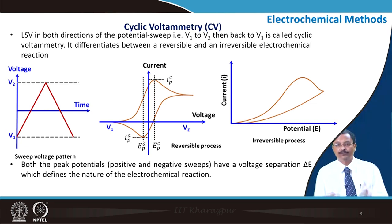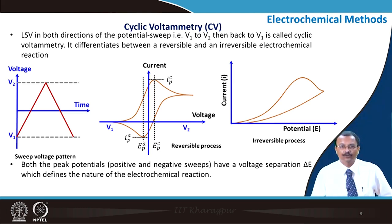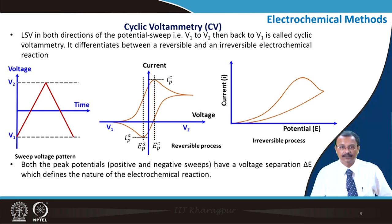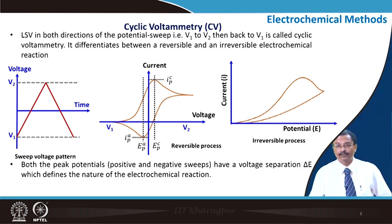We can apply linear sweep voltammetry in both directions of the potential sweep: initially from V₁ to V₂ and then back to V₁. This is called cyclic voltammetry. It differentiates between reversible and irreversible electrochemical reactions. Both peak potentials from the positive and negative sweep have a voltage separation, which is a significant parameter defining the nature of the electrochemical reaction.